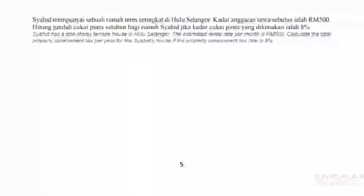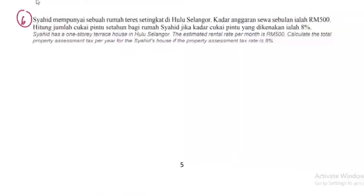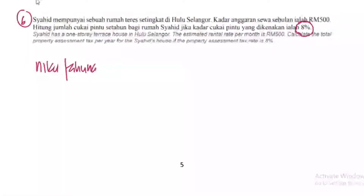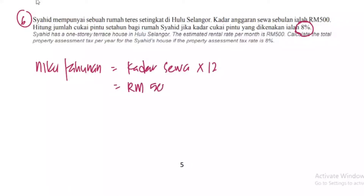Soalan ke-6 melibatkan anggaran sewa bulanan — ini lain, kena guna formula lagi satu. Kadar anggaran sewa sebulan RM500. Hitung cukai pintu setahun jika kadar cukai pintu dikenakan 8%. Sewa tu RM500, kena kira nilai tahunan dulu. Nilai Tahunan = kadar sewa darab dengan 12 bulan: RM500 × 12 = RM6,000. Jumlah cukai pintu = RM6,000 didarabkan dengan 8%.